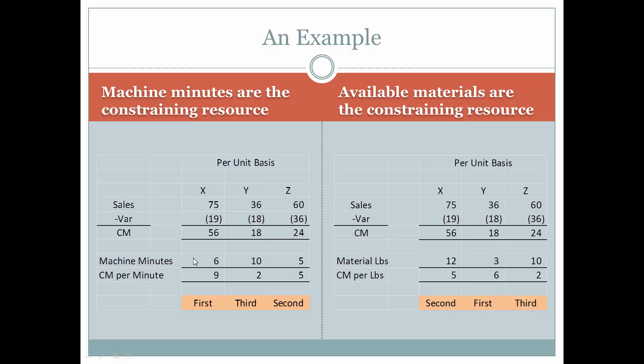Now, we need to know how many minutes are needed on the machine. There is obviously not enough machine minutes to satisfy demand for all of their products, so they have to look and see which one of these products, X, Y, or Z, is going to give them the biggest bang for the buck when trying to go through this constrained resource or bottleneck. The contribution margin per minute is obtained by taking the contribution margin, dividing by the minutes needed per unit.